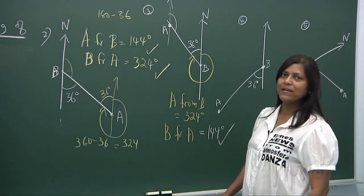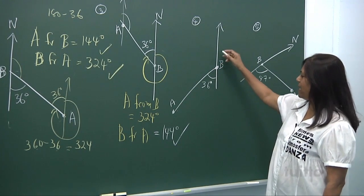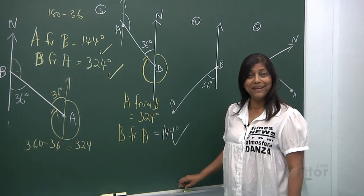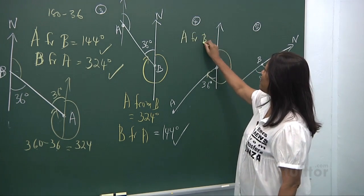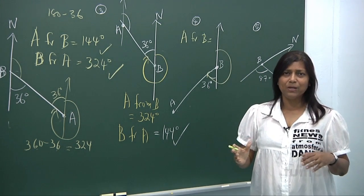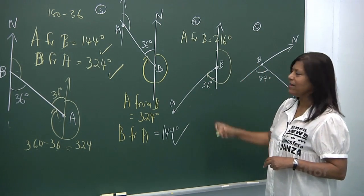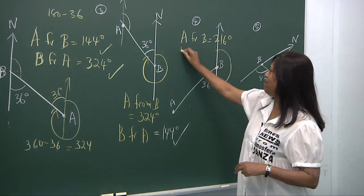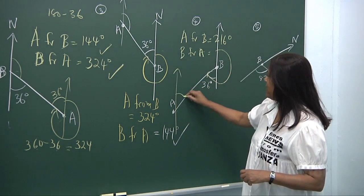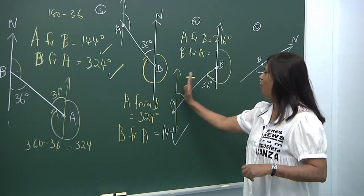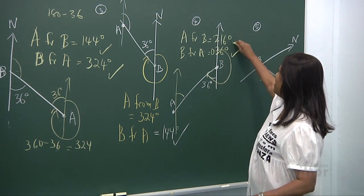Looking at this next example, the bearing of A from B: from B, this angle goes from north down through south, so it's 180 plus 36, giving 216 degrees. For the bearing of B from A — from A you draw north, and these two angles are equal at 36 degrees, so you write it as 036 degrees.